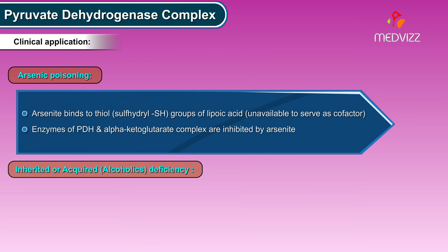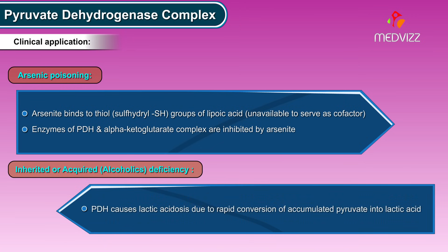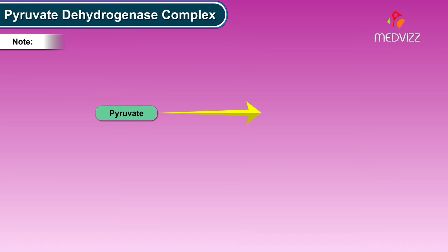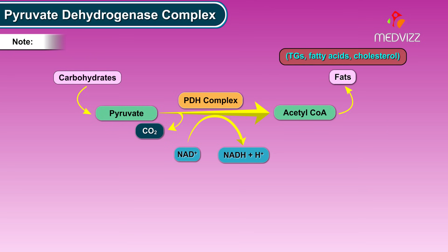Inherited or acquired deficiency of PDH, including in alcoholics, causes lactic acidosis due to rapid conversion of accumulated pyruvate into lactic acid. It is important to note that pyruvate is derived from carbohydrates, while acetyl coenzyme A is derived mainly from fats, which include triglycerides, fatty acids, and cholesterol.